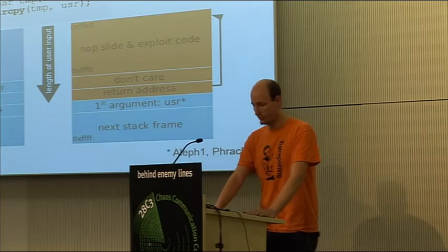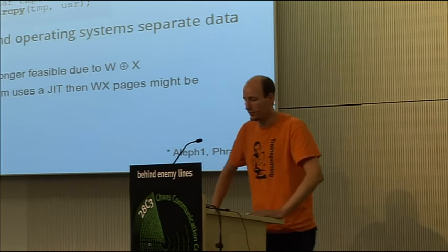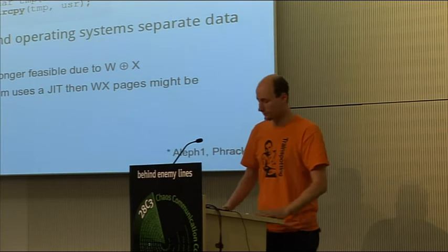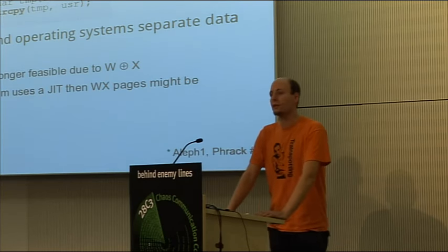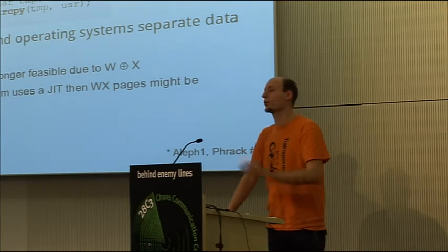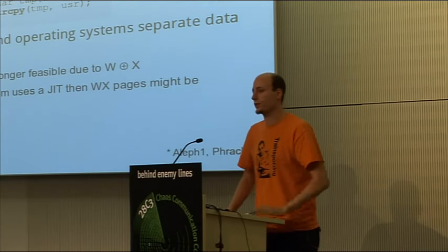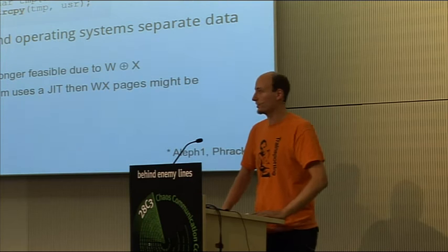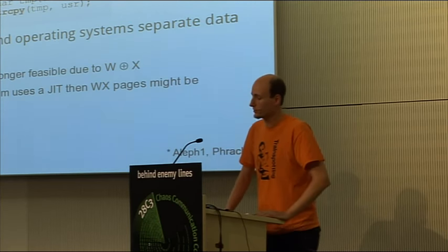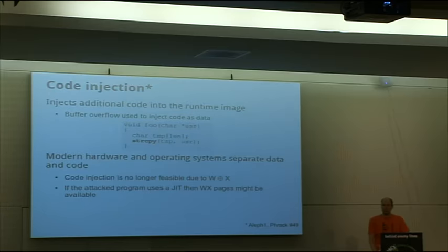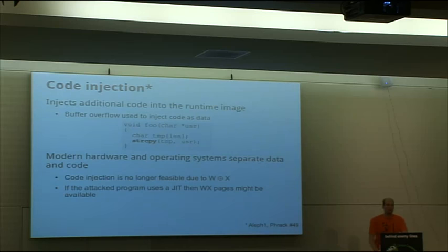Things have changed since then. Modern hardware and operating systems separate data and code. On a page-level granularity, the operating system can enforce that memory is either data or code. If it's data and the attacker writes code into that data page and wants to execute it by overwriting the return instruction pointer, the processor will raise an exception and stop the program. Due to this additional hardware, code injection is no longer feasible because the protection mechanisms ensure that a page is either writable or executable but never both.